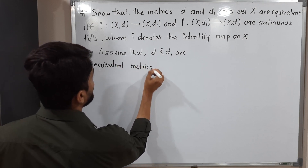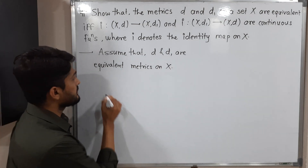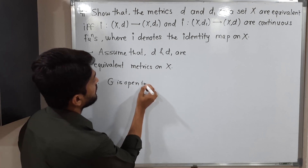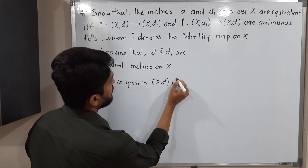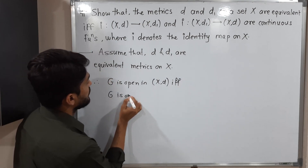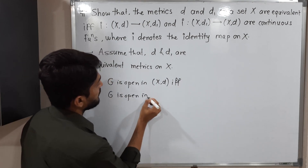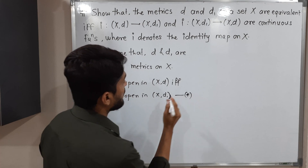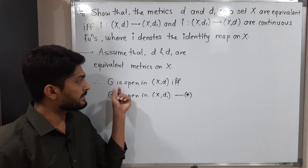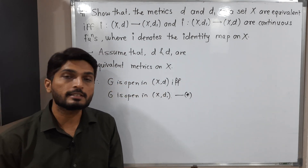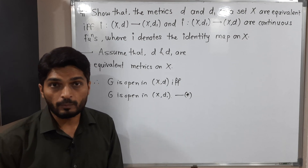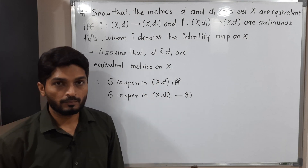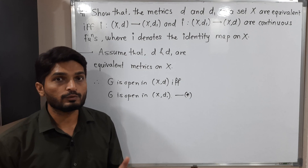By definition of equivalent metrics, a set G is open in (X,d) if and only if G is open in (X,d1). So if you have any open set in (X,d), it is definitely an open set in (X,d1), and if you have any open set in (X,d1), then it is open in (X,d).